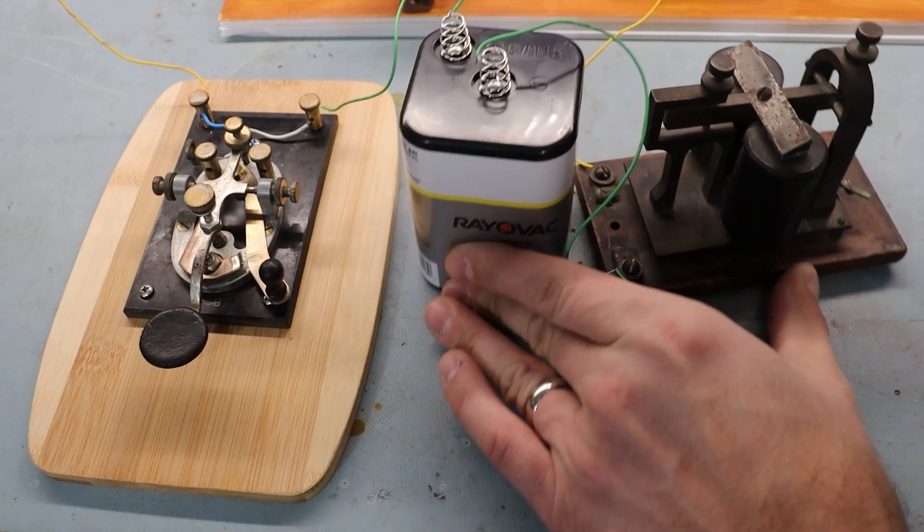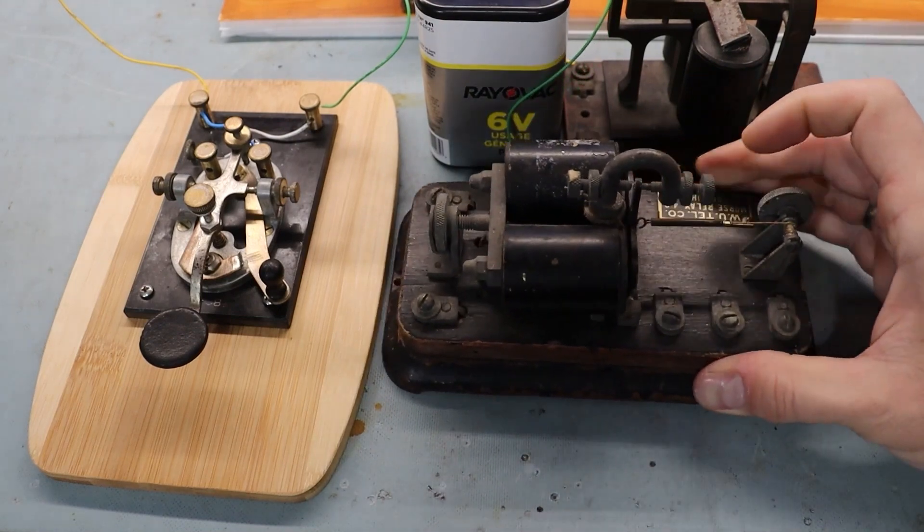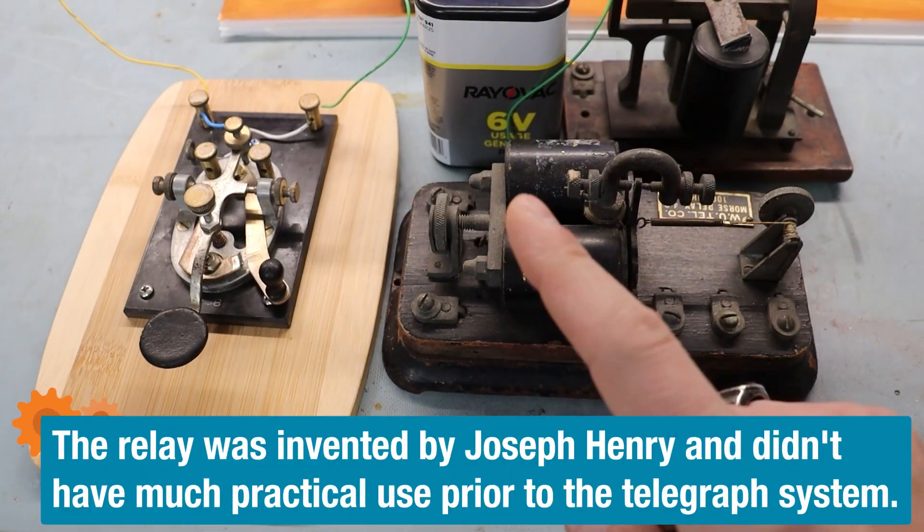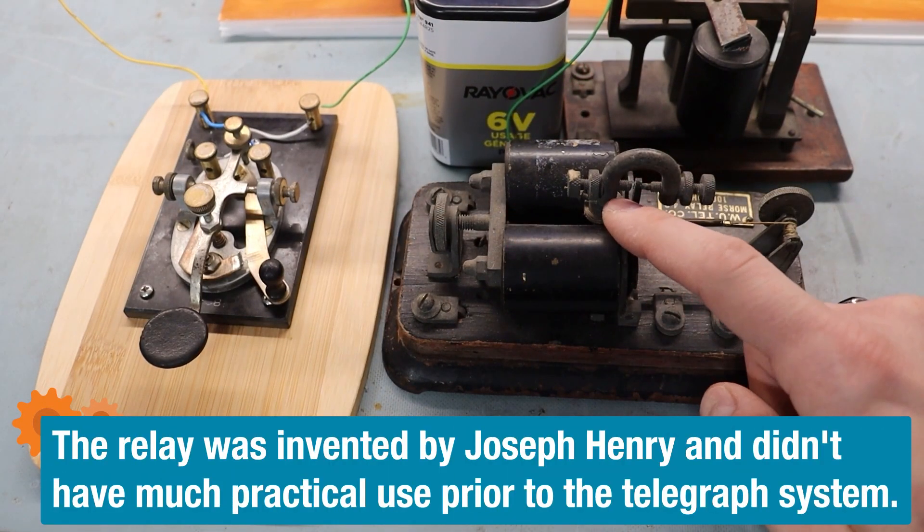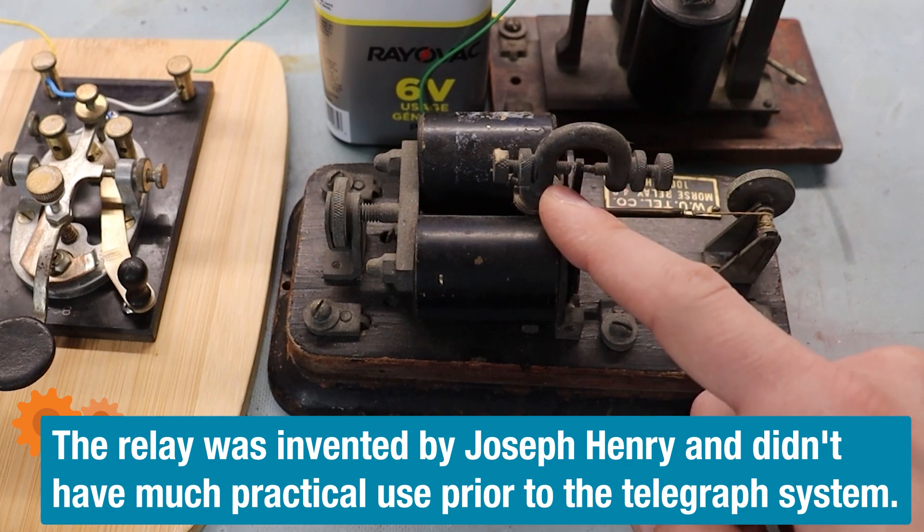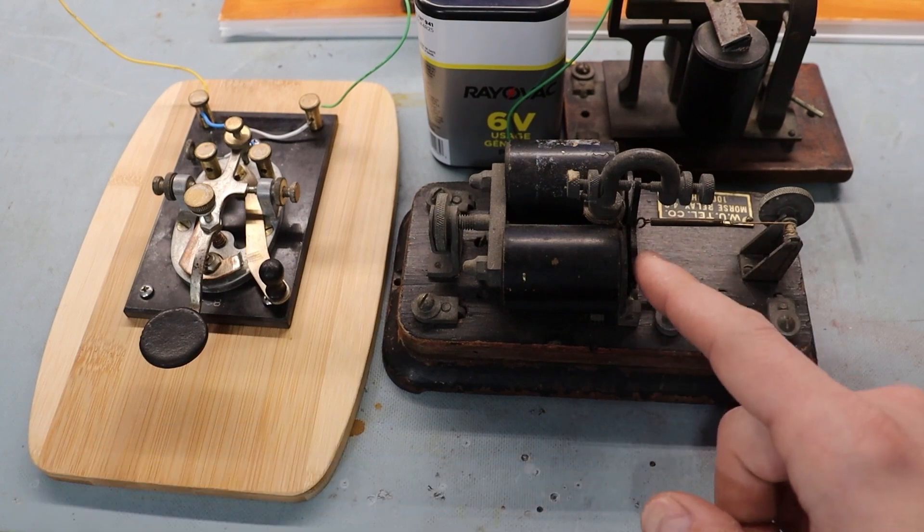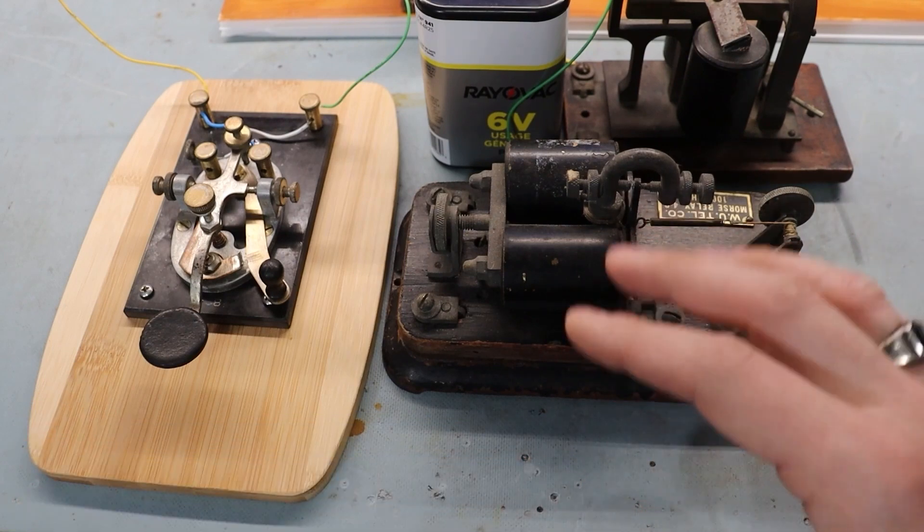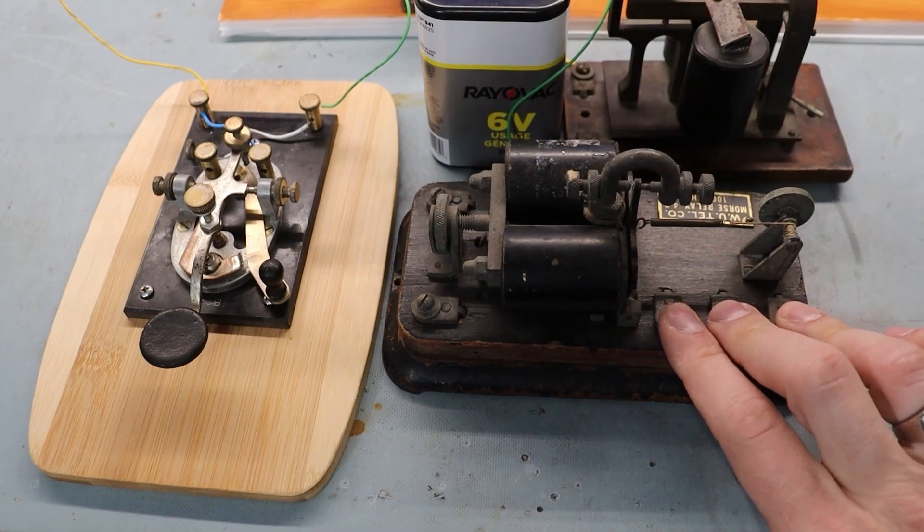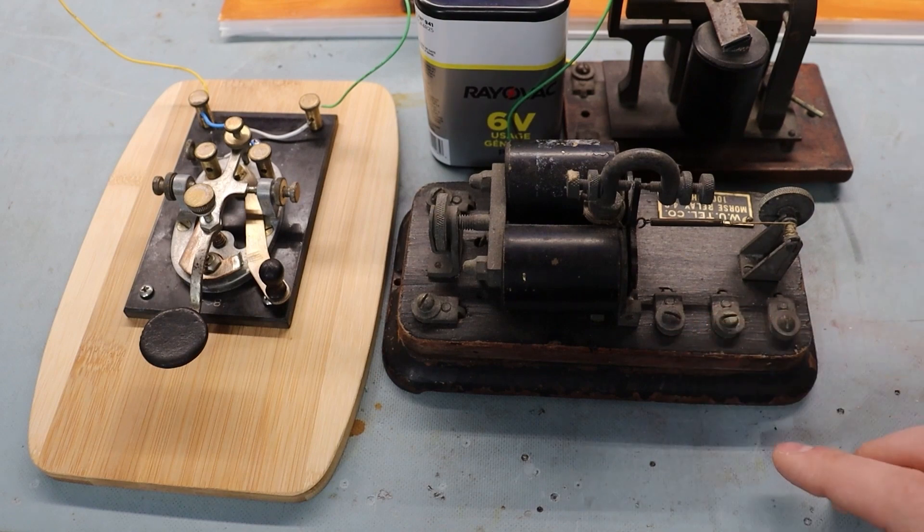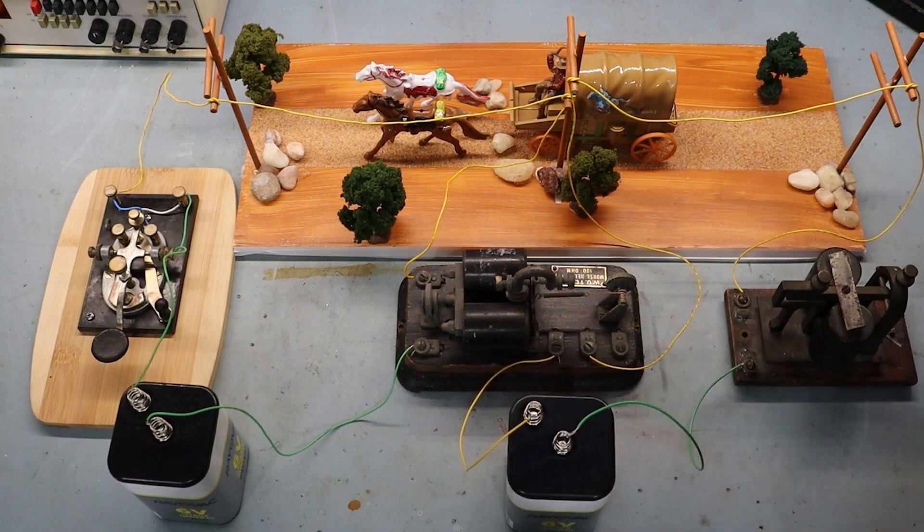So it didn't take long to figure out that that intermediate person could be replaced by an electromechanical device that could automatically relay the message for you. So was born the relay. We have an electromagnet that actuates an armature that makes contact to a set of terminals. So this would be put in series with the existing circuit, and then we could retransmit this with another battery bank across these terminals that are connected back to the telegraph line going to that third station.